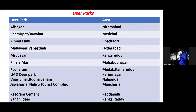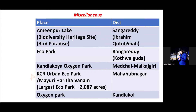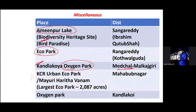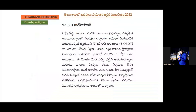These are some deer parks that may appear in examinations. Aminpur Lake is designated as the Biodiversity Heritage Site — it is in Sangareddy. Kotwal Guda Eco Park is in Rangareddy. Kanlakoya Oxygen Park is in Medchal Malkajgiri area. KCR Urban Eco Park or Mayuri Haritavanam is in Mahabubnagar. Remember: Aminpur Lake is the designated biodiversity heritage site in Telangana — it was actually constructed by the Qutub Shahi dynasty.